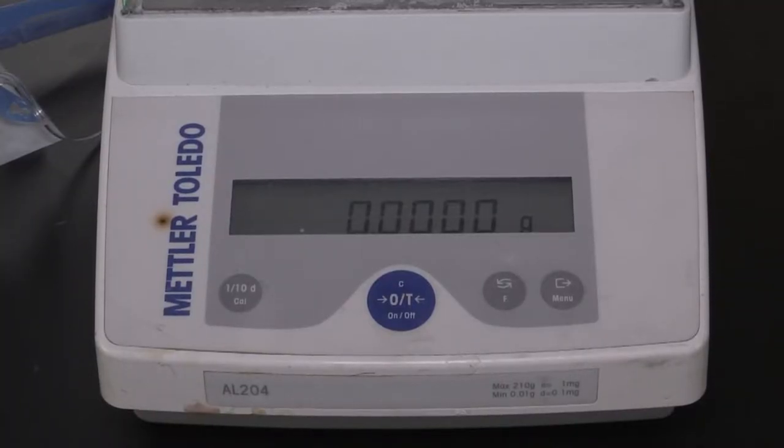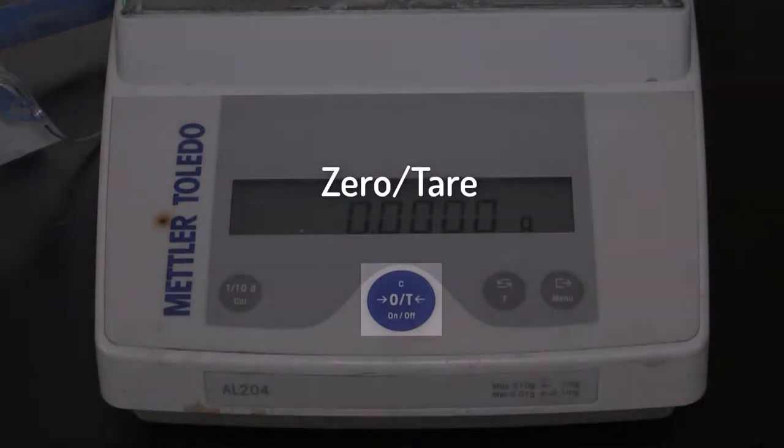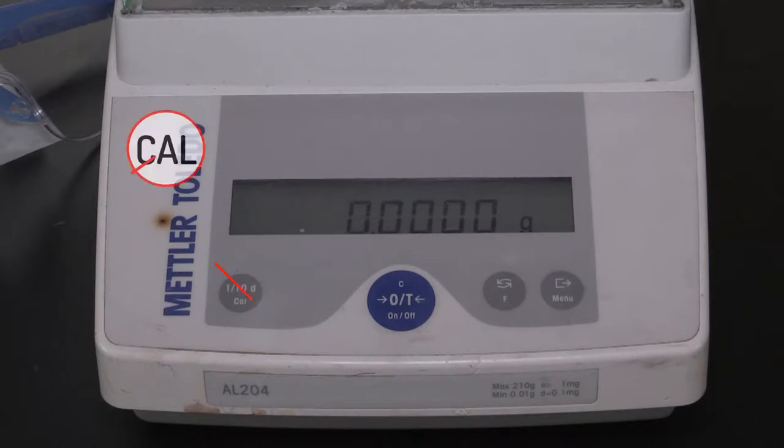Let's take a few moments to identify some of the buttons on the balance. First, there is the zero tare button. This is the one that you're going to use the most often. Don't ever touch the calibration button and also make sure that the correct units are being measured. The units should be grams.